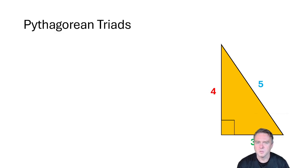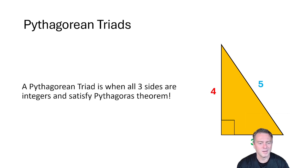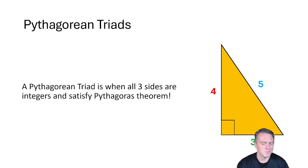Pythagoras, many many years ago, built this really cool theorem. The idea was basically that the hypotenuse squared on a right-angled triangle is equal to the other two sides squared added together. He found that if all three sides are integers and they satisfy the Pythagorean theorem, that is what a triad is. So the first triad was the 3-4-5: 5 squared is equal to 3 squared plus 4 squared.